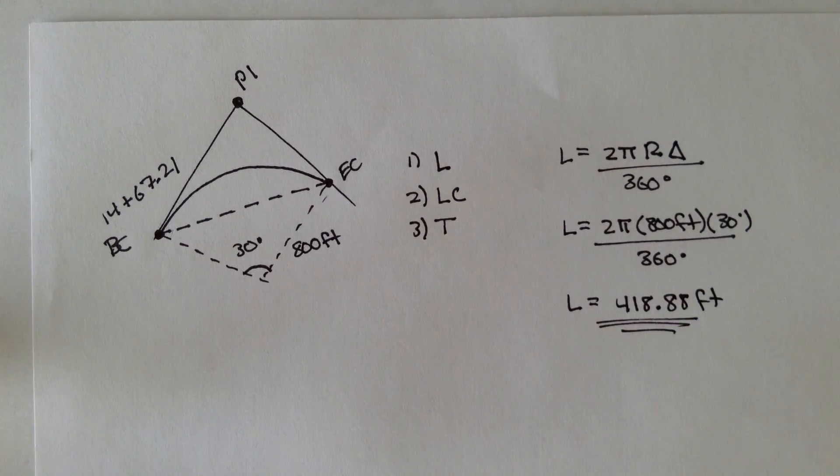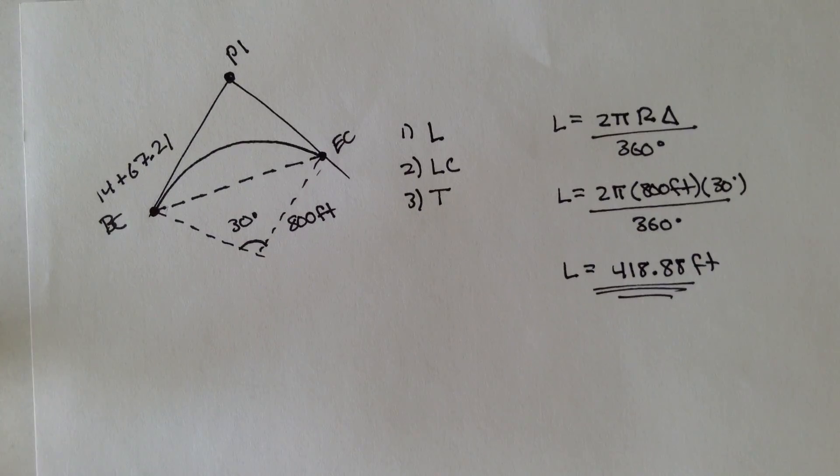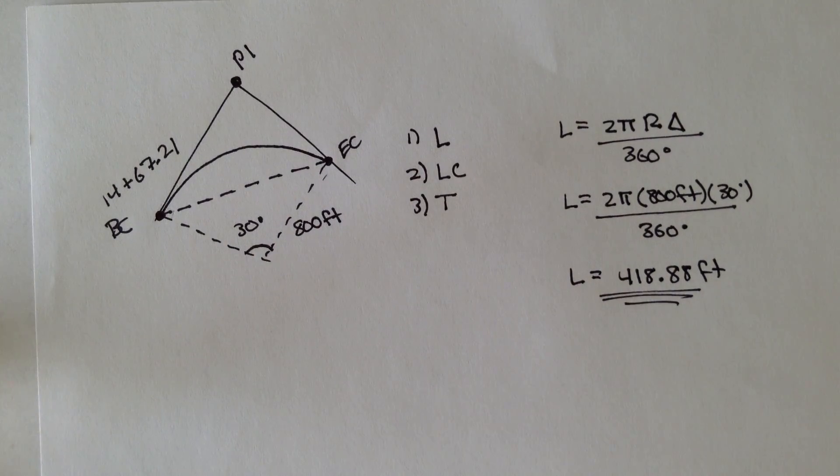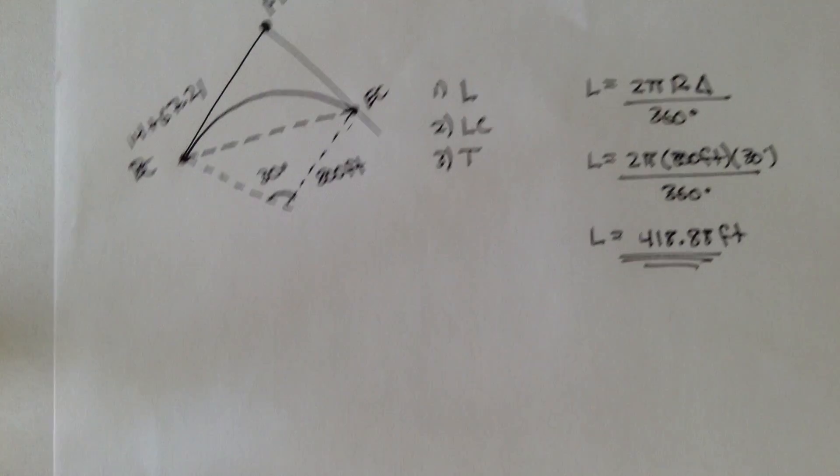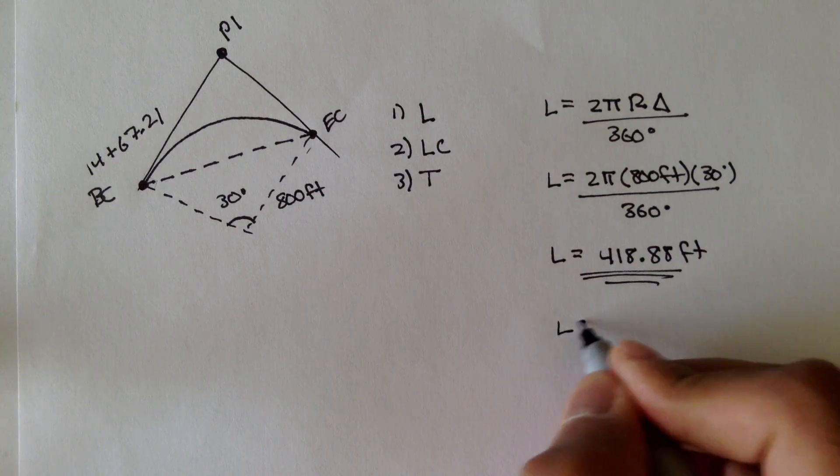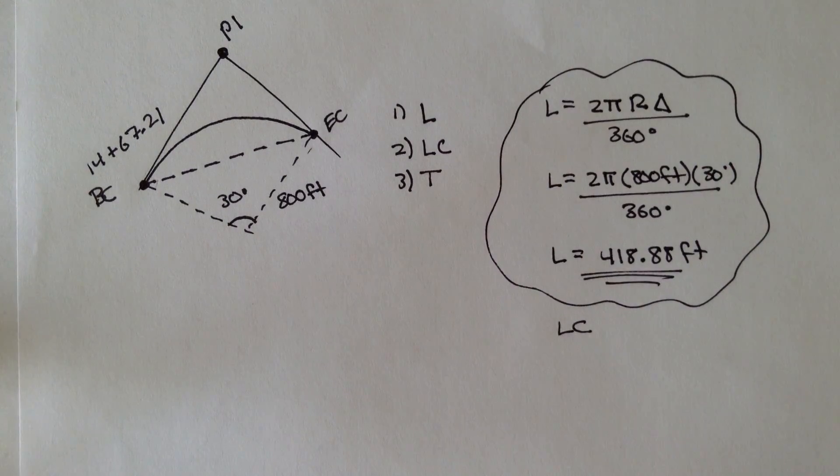So that's one of the three problems. We have the length. Now, let's find the long cord. The long cord is the distance from BC to EC. And again, we have a formula for that. I'm going to keep the diagram in the picture. So for the long cord,